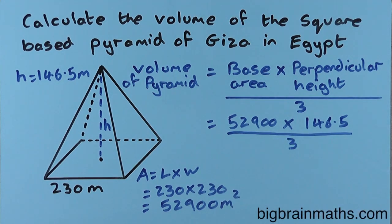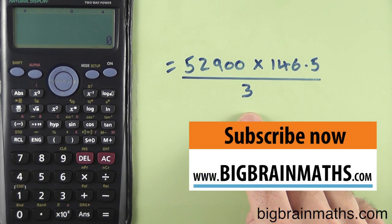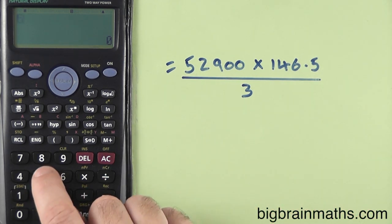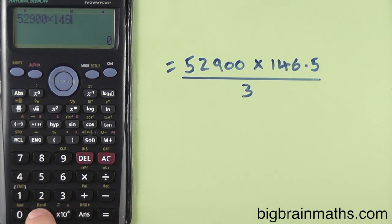I'll work this out on a calculator. To enter this calculation into the calculator, we just type it straight in. We don't need to put any brackets in this calculation, so we type 52,900 multiplied by 146.5 divided by 3. I always recommend rounding your answers to two decimal places unless the question tells you otherwise.